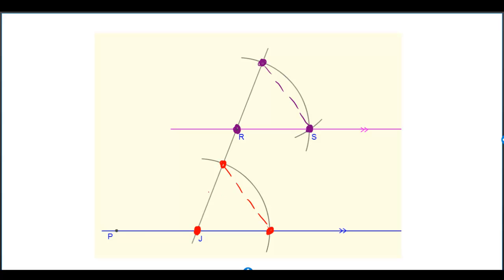We use the same compass width for this side, this side, this side, and this side. Then we copy the length of this dotted line for the purple triangle.